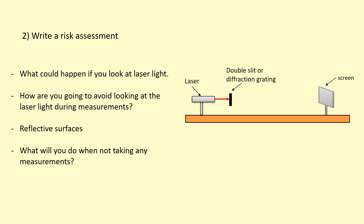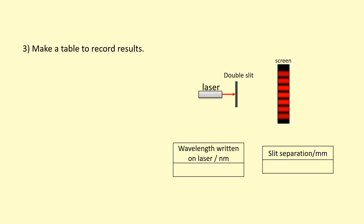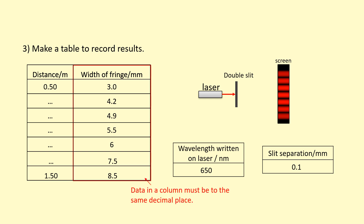You can do some additional research to add to your risk assessment. Step three is to make a table to record your results. You need to record constants such as the wavelength written on the laser — so you can compare it with your answer at the end — and the slit separation. For example, I used red light at 650 nm with 0.1 mm slit separation. Then you'll record the distance to the screen in metres and the width of the fringes (averaged over multiple fringes). An important note: all data in a given column must have the same number of decimal places — for example, writing '6' instead of '6.0' is wrong and would cause you to fail that CPAC.